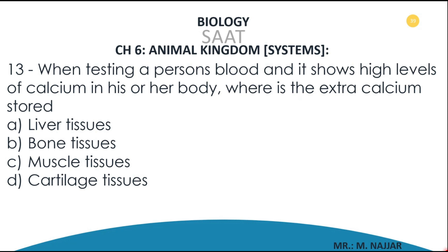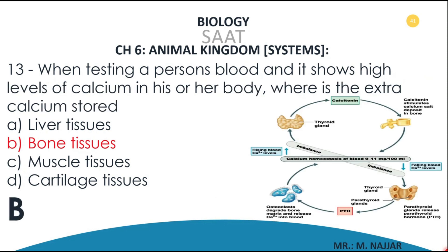A patient shows high levels of calcium in his or her blood — where is the extra calcium stored? A) liver, B) bone tissues, C) muscle, D) cartilage tissues. The correct answer is B — bone tissues. Calcium homeostasis should be 9 to 11 milligrams per 100 milliliters of blood. When blood calcium rises, the thyroid gland secretes calcitonin, which stimulates calcium to be deposited and stored in the bone tissue.